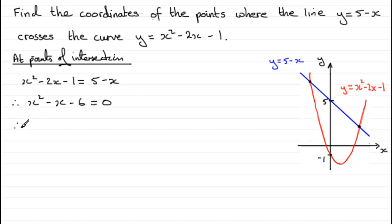So we can either use the formula if it doesn't factorise, or if it does factorise, which it does in this example, just take the opportunity of factorising it. And what we've got here is x minus 3 and x plus 2.